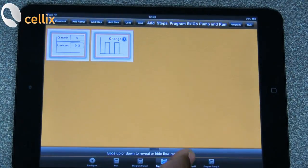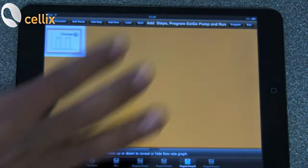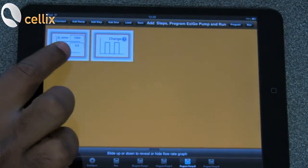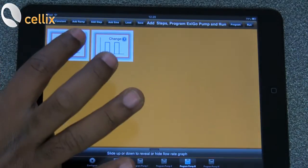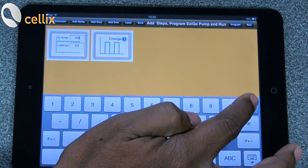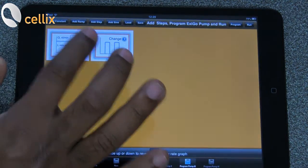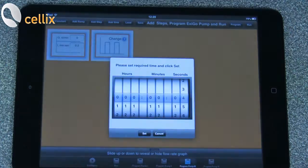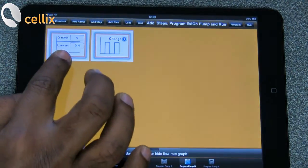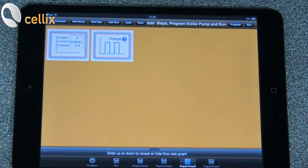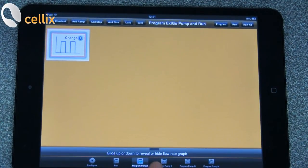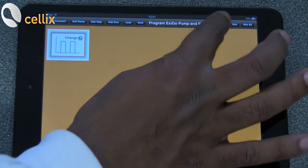Then you go to pump 3, click load. So you have the parameters there where you need to change this to 0 and here 4 seconds. So once you have set all the parameters, you can go to pump 1 and click program.